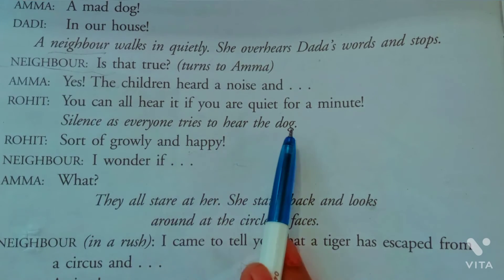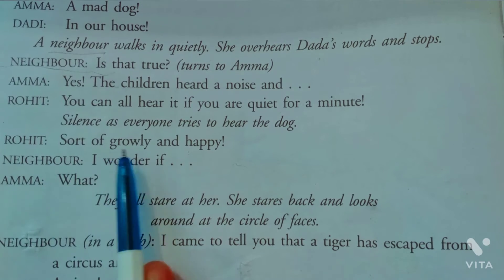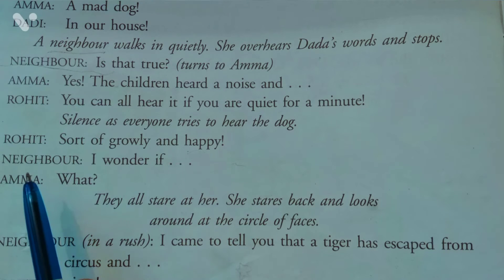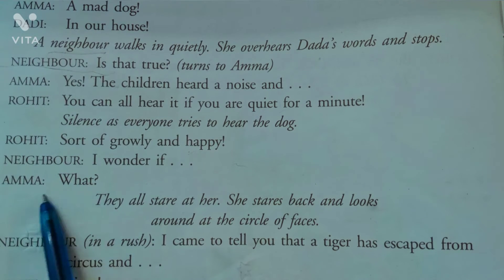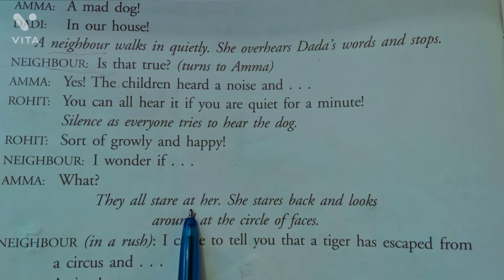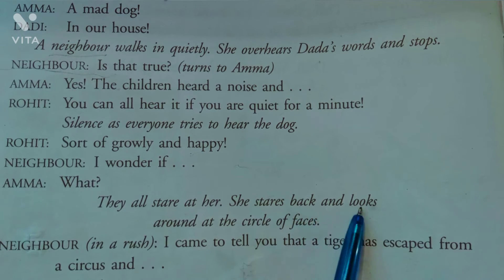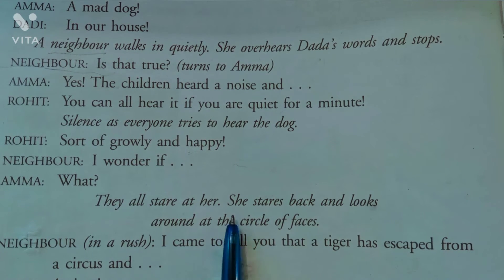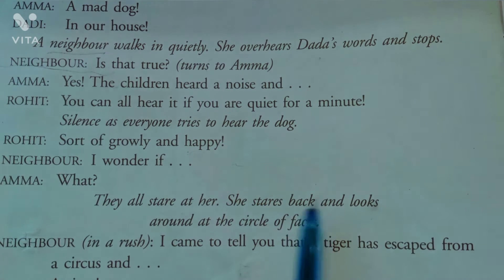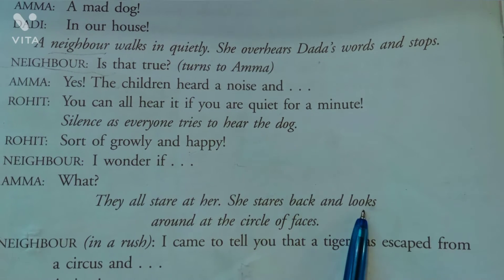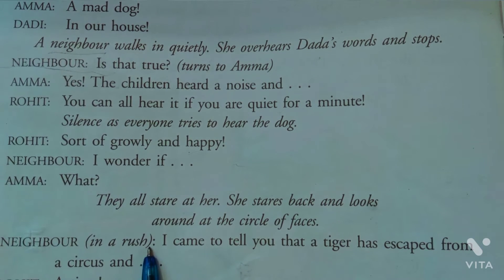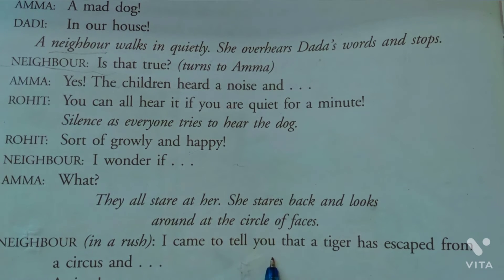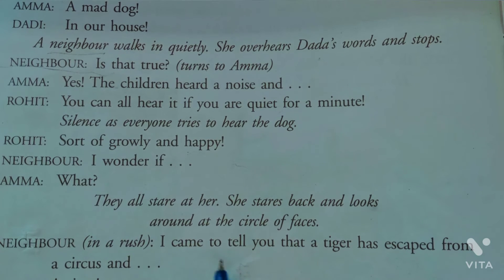Saare ke saare chup ho jaate hain. Rohit bolta hai 'Sort of growly and happy.' Then the neighbor in a rush bolta hai 'I came to tell you that a tiger has escaped from a circus' — circus mein se tiger gaayab ho chuka hai, uska palayan ho chuka hai. Kya storeroom ke andar tiger ghus gaya?